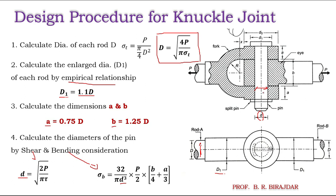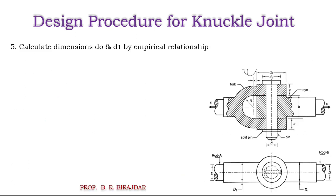We always go for the larger diameter — whichever of the two is larger is taken as the final diameter of the pin. Next, we find D0, the outer diameter of the fork, and D1, the diameter of the pin head, using empirical relations: D0 = 2d and D1 = 1.5d.